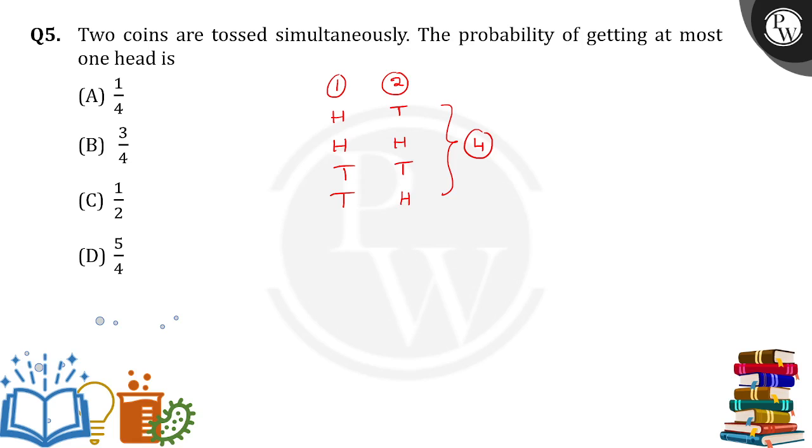The probability of getting at most one head. At most one head means: here we got one head, here we got two heads, here we got one more head. So there are totally three possibilities out of four. So the probability is 3/4. Option B is the right answer.